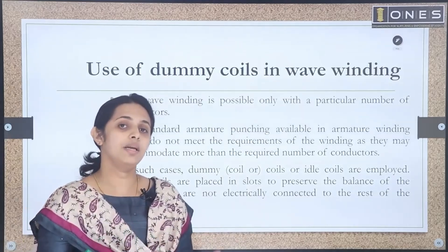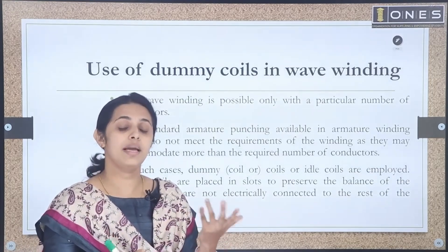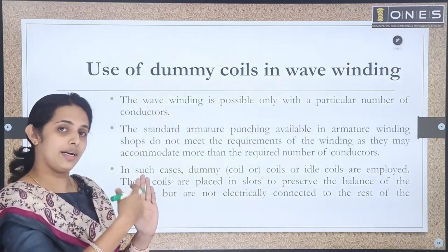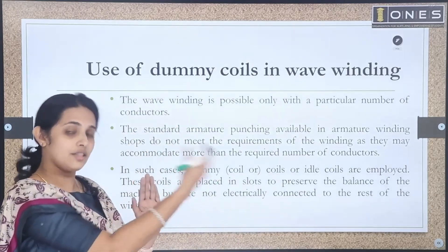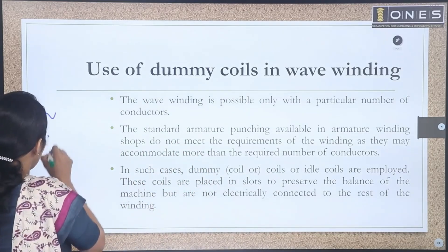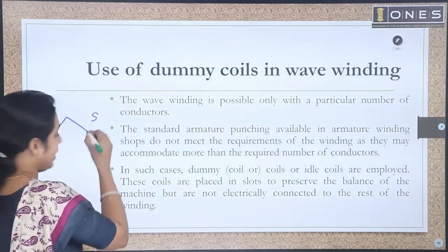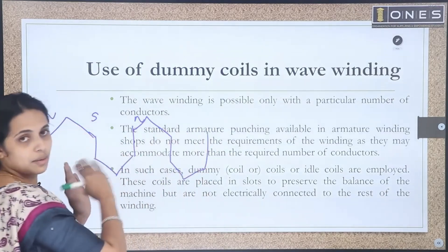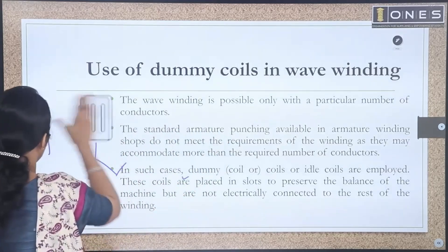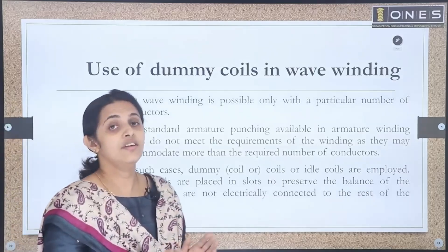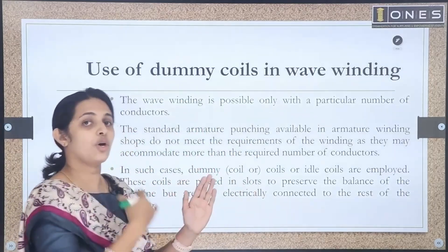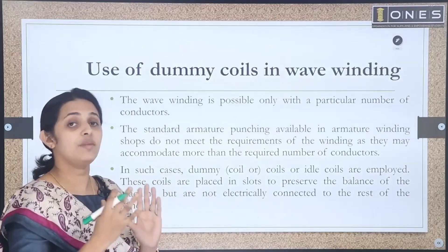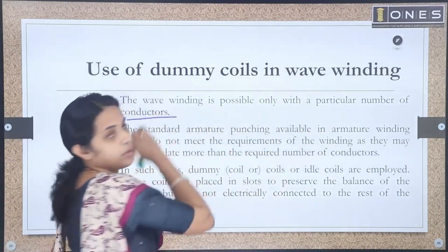Why do we use dummy coils in wave winding? In wave winding, we use a series connection — conductors under the south pole are connected to corresponding conductors under the north pole. Wave winding is only possible with a particular number of conductors; not all conductor counts allow a closed wave winding.